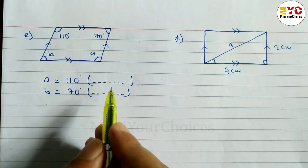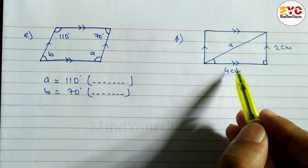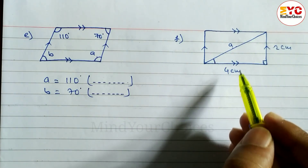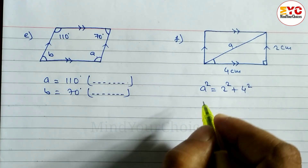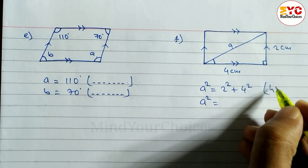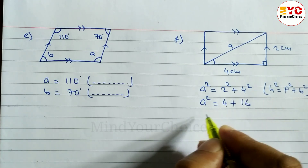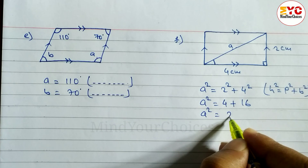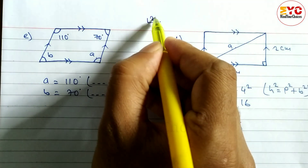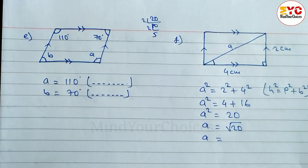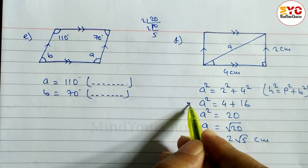Now look at question f. In front of the 90-degree angle, we identify h, p, and b. Using h squared equal to p squared plus b squared, we write a squared is equal to 2 squared plus 4 squared. So a squared is equal to 4 plus 16, which gives us 20. Therefore a is equal to root under 20. Finding the factors: 20 equals 2 times 10, and 10 equals 2 times 5. So a is equal to 2 root under 5 centimeters.